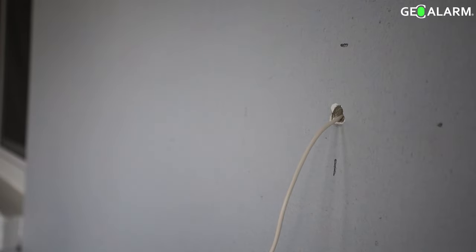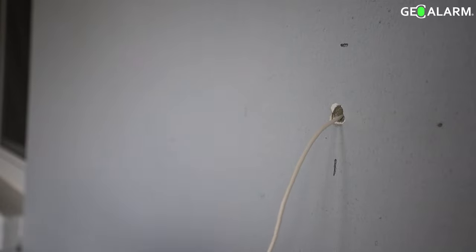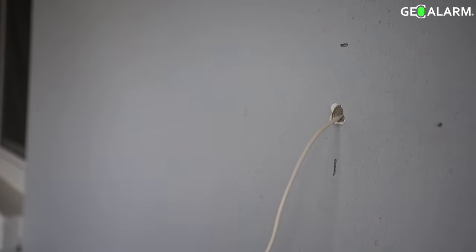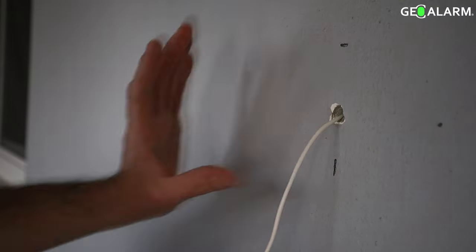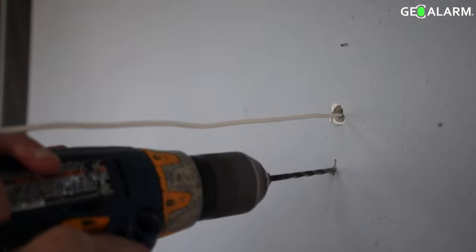Hey everyone, we are back and we are going to show you how to install the GeoVDBC for the GeoAlarm system. As you can see, we've already pre-run the wire here. More than likely at your home it will look just like this with the wire already pulled, so you're just going to be removing a doorbell and basically installing the new one.